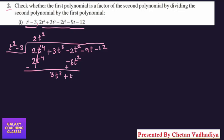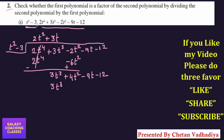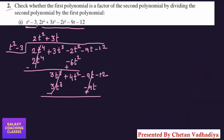Next, we need t² into 3t, so the next quotient term is 3t. Multiplying 3t by t² gives 3t³, and 3t by –3 gives –9t. We align –9t and change signs: 3t³ cancels and –9t cancels with +9t, leaving 4t²–12.